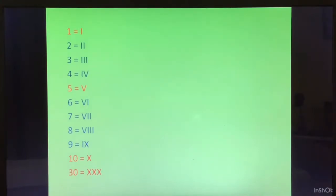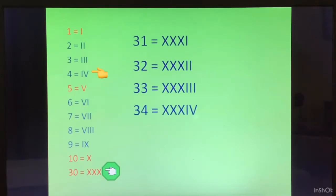In the same way, we are going to generate 31 to 40 by using 30, XXX. Now 31 is XXX plus 1, that is XXXI. 32 is XXXII. 33 is XXXIII. 34 is XXXIV. 35 is XXXV.